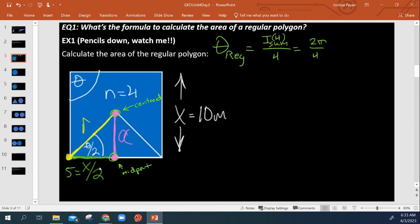So that's going to be 2 pi over 4, which means we have pi over 2. So that means theta regular here is pi over 2. And that means this angle right here is half of that. So this would be pi over 4.